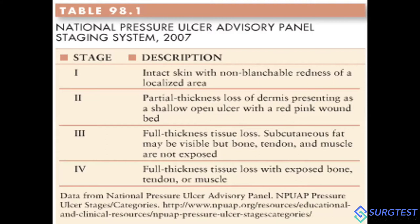In the third stage, there is full thickness tissue loss. Subcutaneous fat may be visible, but the ulcer has not reached the underlying bone, tendon, or muscles — those are not exposed. This is a key exam point: in stage 3, bone, tendon, and muscle are not exposed.